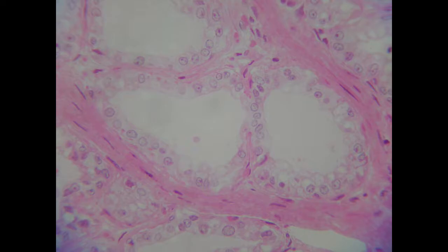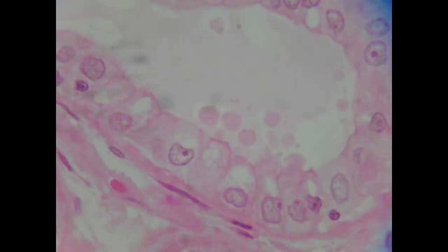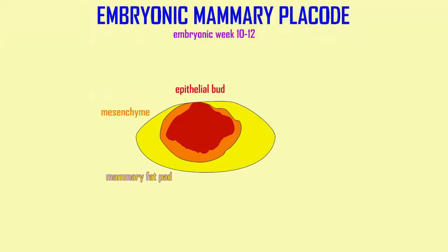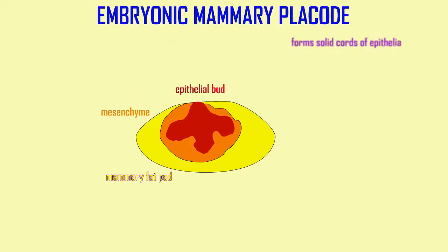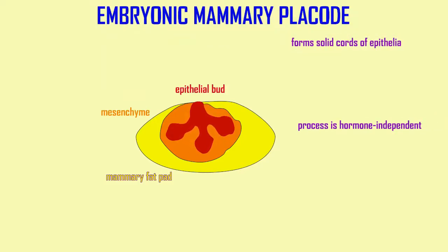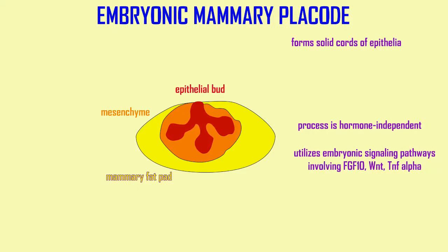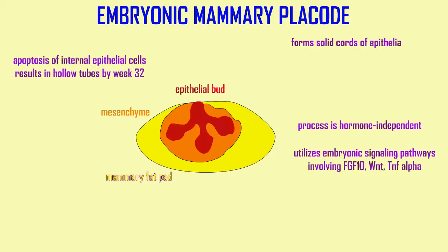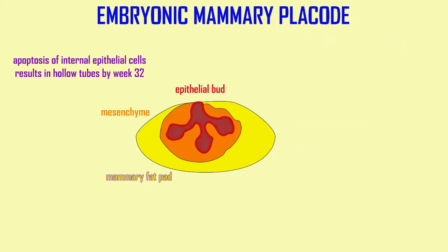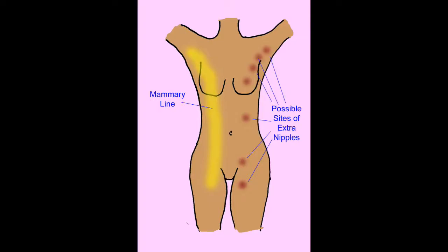Mammary glands are modified sweat glands which develop in embryos along an embryonic mammary ridge, which stretches from the armpit region to the thigh.